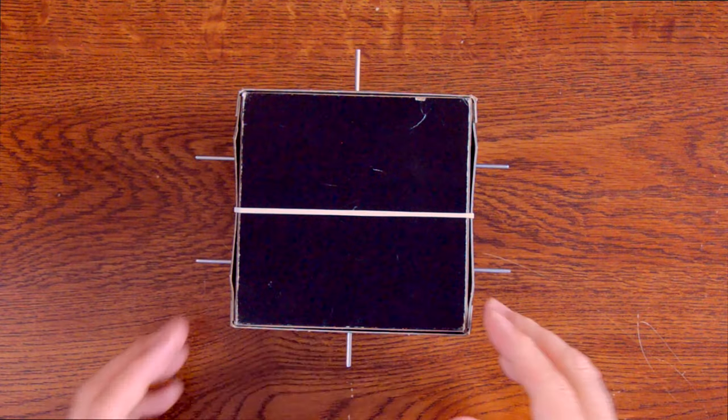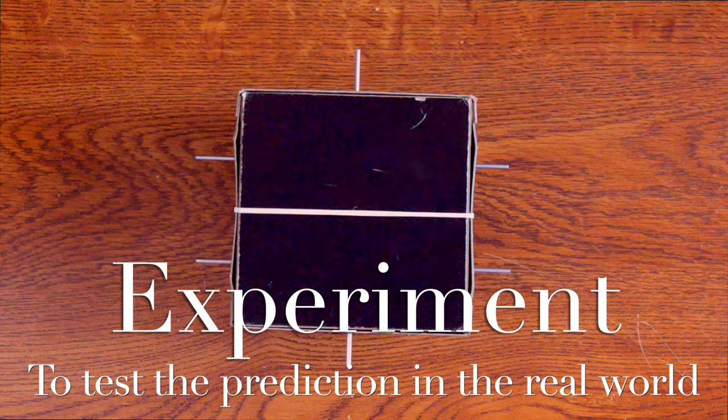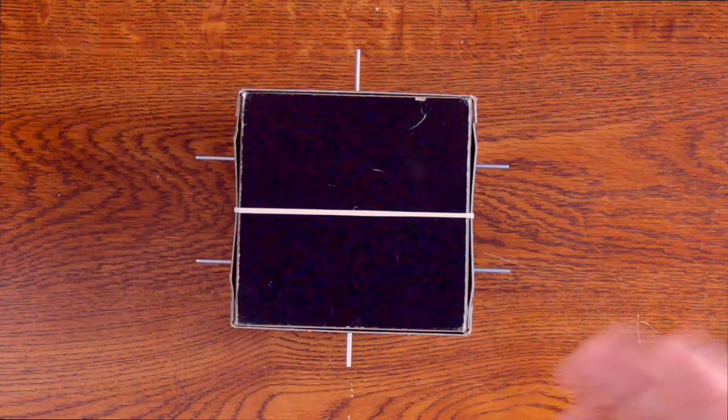Now if the result of our rod pulling experiment doesn't match our plunk prediction, that means we've disproved our hypothesis, which means we need to return to the hypothesis and revise it.